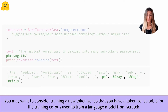Most tokenizers used by current state-of-the-art language models need to be trained on a corpus that is similar to the one used to pre-train the language model. This training consists in learning rules to divide the text into tokens, and the way to learn and use these rules depends on the chosen tokenizer model.